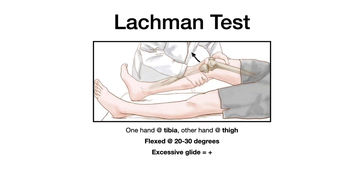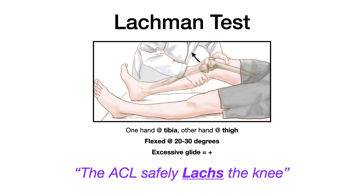Another test for the ACL is the Lachman test, which is very similar to the anterior drawer test. In the Lachman, you have one hand on the tibia and the other on the thigh. The key difference is that the knee is only flexed to about 20 or 30 degrees. Just like the anterior drawer test, if there's excessive glide, that's a positive test signifying ACL damage. The mnemonic: the ACL safely locks the knee — locks for Lachman.